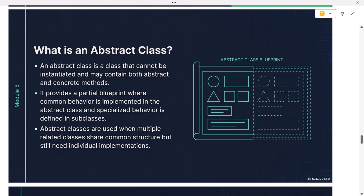What is an abstract class? An abstract class is a class that cannot be instantiated and may contain both abstract and concrete methods. It provides a partial blueprint where common behavior is implemented in the abstract class and specialized behavior is defined in subclasses. Abstract classes are used when multiple related classes share common structure but still need individual implementations.